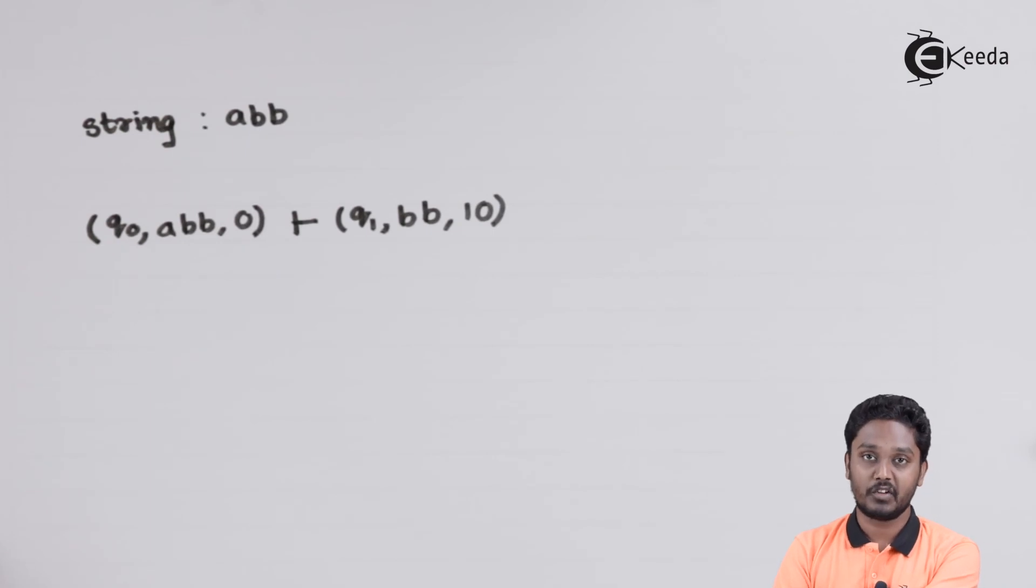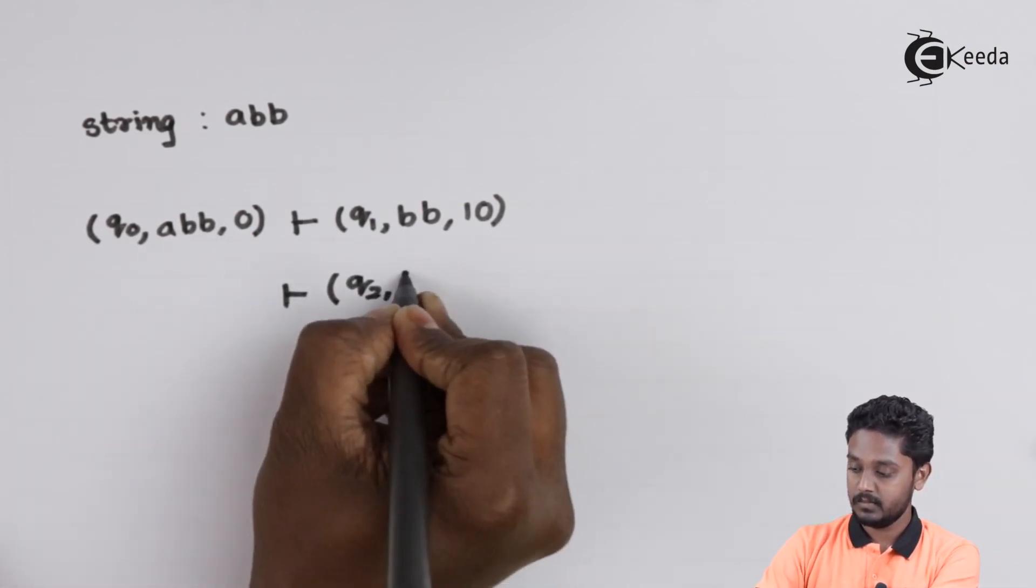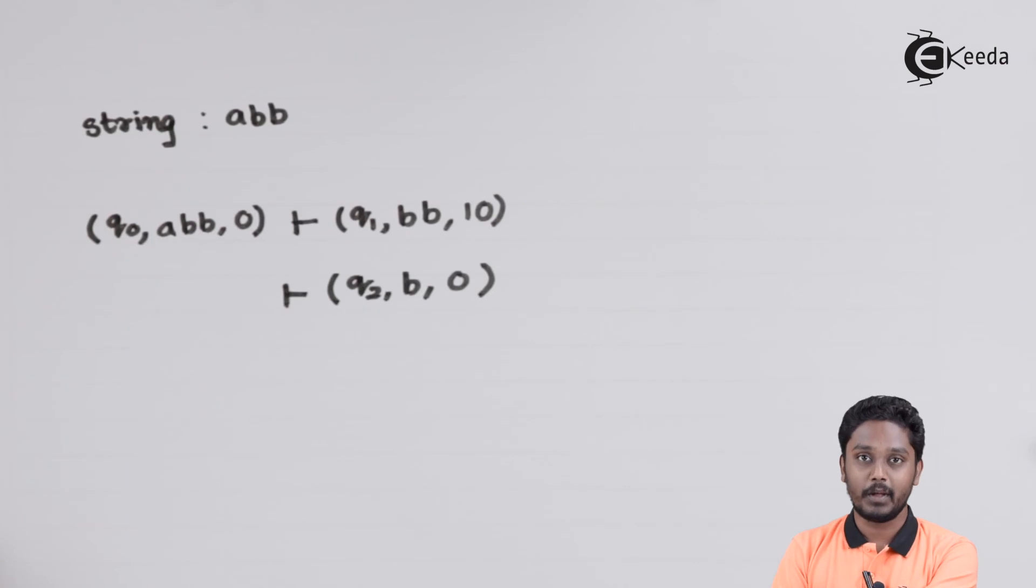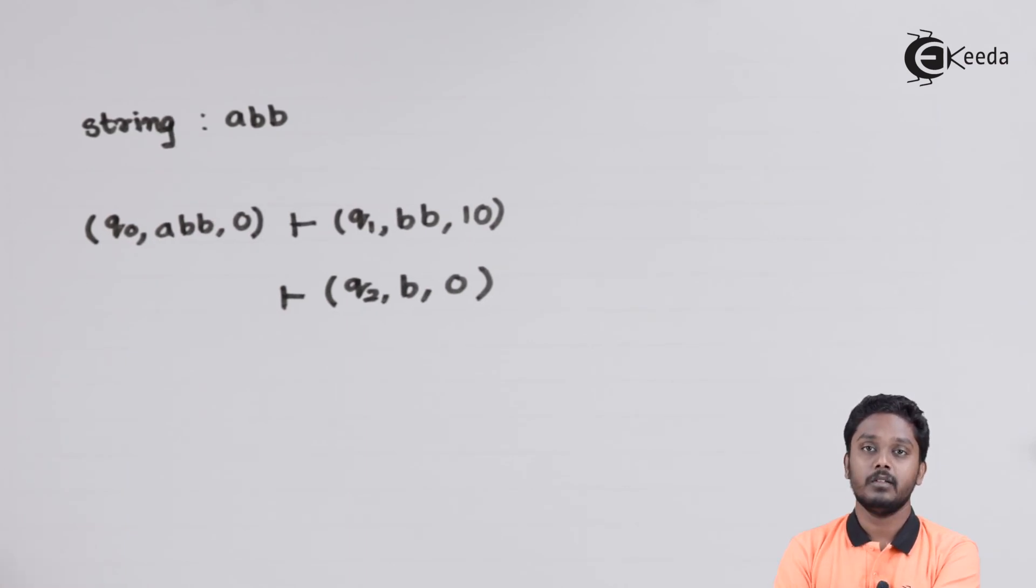Now, we need to do the next transition, that is transition number 2. From state Q1, on the first B, we will have a transition to state Q2, by popping out a 1. After popping out, we will be left with just 0 on the top of the stack. From Q2, with B as the input symbol and 0 as the top of the stack, we have a transition to the next state.